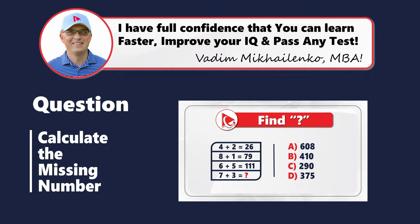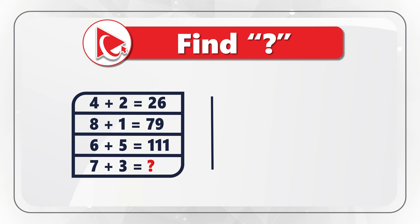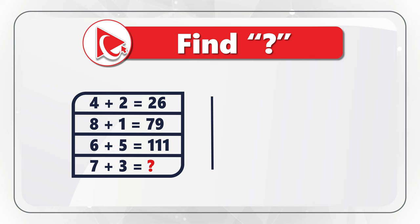As you might have figured out, we are not dealing with typical math expressions here. The pattern is that the last two digits are calculated based on two operations: subtraction and addition. For example, the first expression is 4 plus 2 equals 26 — but the digits in 26 are calculated differently. The first digit, 2, is calculated as 4 minus 2. The second digit, 6, is calculated as 4 plus 2. The second expression: 8 minus 1 equals 7, and 8 plus 1 equals 9, giving 79. The third: 6 minus 5 is 1, and 6 plus 5 is 11, giving the three-digit number 111.